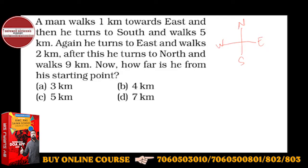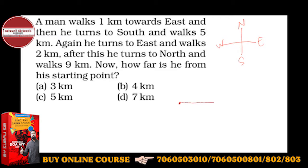A man walks one kilometer towards east. Let's take a reference point — suppose this is the reference point, and here is one kilometer east. Suppose this is one kilometer. Now he has reached here, and then he turns to south and walks five kilometers to south.